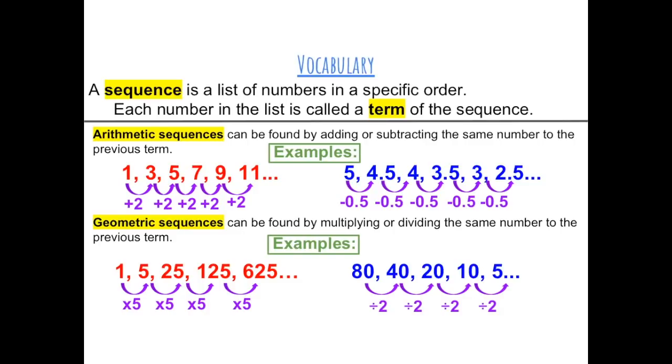A sequence is a list of numbers in a specific order. Each number in the list is called a term of the sequence.